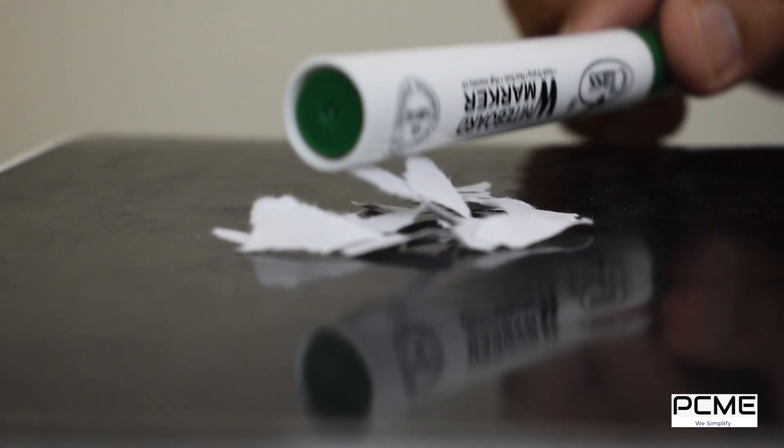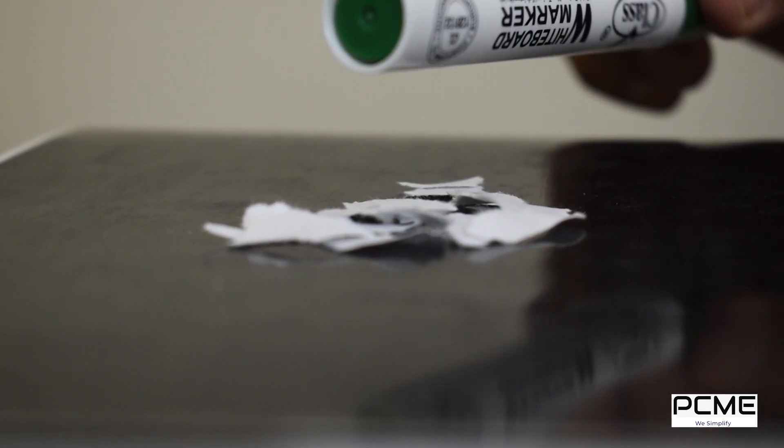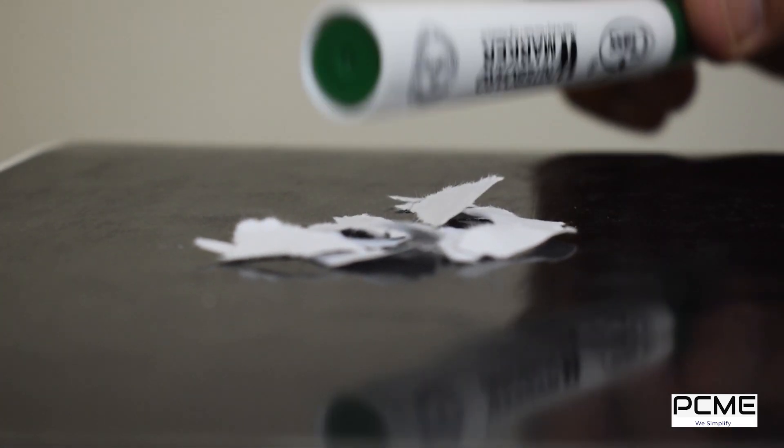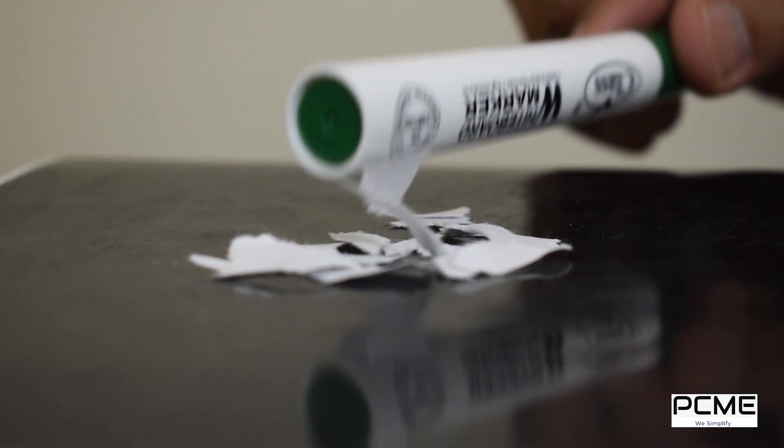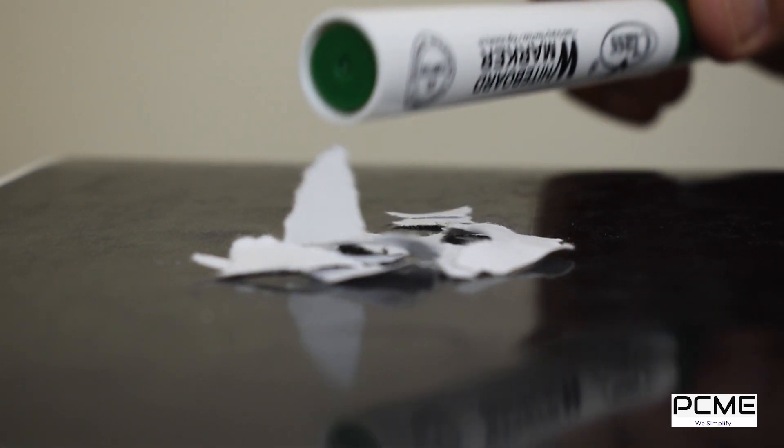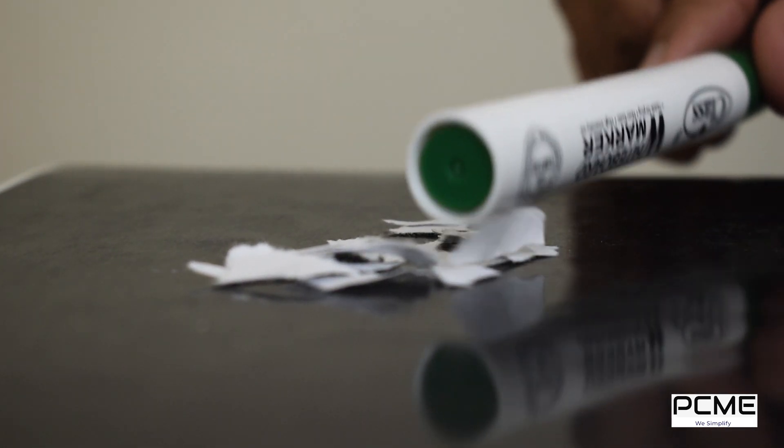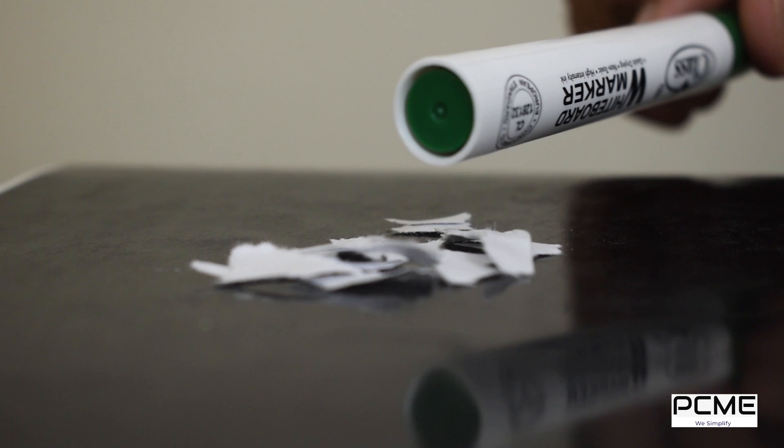Now when I bring the charged rod close to the piece of paper you can see that they get attracted. The reason for that is the charge developed on the marker attracts opposite charge in the piece of paper. As a result they get attracted towards it.